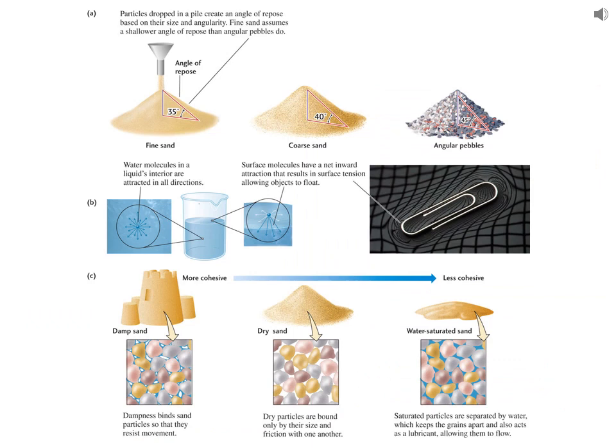The way that mass wasting works: any kind of unconsolidated material is basically under the influence of two factors — gravity and friction. As gravity and friction counterbalance each other, we get a pile of unconsolidated material. The angle at which material will form a slope is usually fairly constant depending on what material you have. That angle is called the angle of repose, because it's the angle at which sediments come to rest at that interface between gravity and friction.